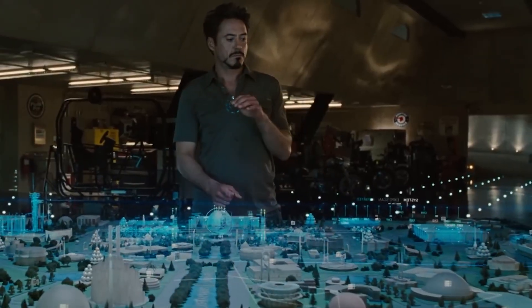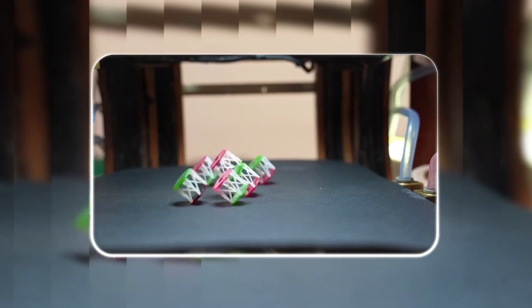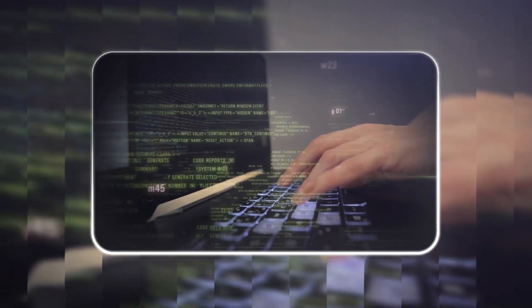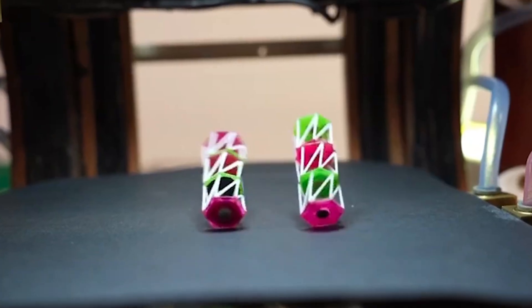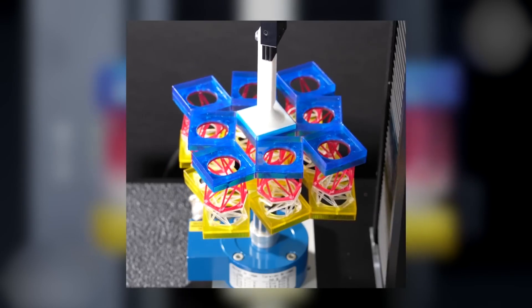And it gets even cooler. The team didn't just stop at making it twist. They figured out how to manipulate it along multiple axes: X, Y, and Z. Think of it like programming shape changes remotely. By shifting the magnetic field in a certain direction, you tell the metabot exactly how to move. Twist left, fold in, roll forward, pause, or reset.